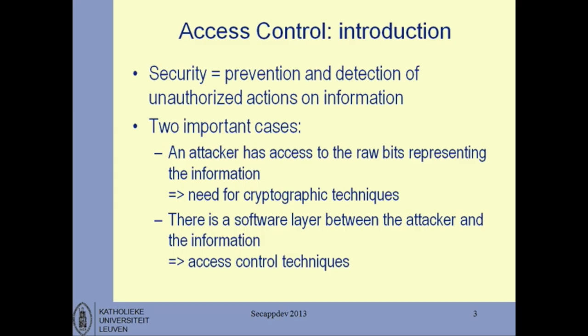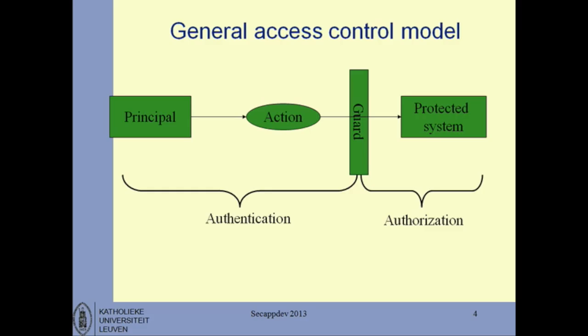In a sense, this is simpler than crypto because you get to write the software that enforces something. But it's also more complicated because the rules you want to enforce here become much more complicated. With crypto, you typically want to make it impossible for anyone sniffing the wire to understand anything — a relatively simple rule. In access control, you get very complex rules, like in a social network where somebody may be able to add metadata but not delete it. The rules are much more complicated and hence there's much more room for mistake — that's where access control typically tends to go wrong.